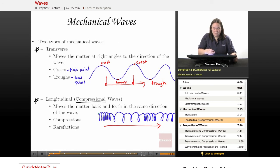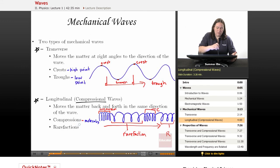This is where it compresses - this is a compression. And where it's spread out is your rarefaction. Where it's compressed is your compression, and where it spreads out is your rarefaction. The compression is the part of the wave where the molecules are squished together or compressed, and the rarefactions are where the molecules spread apart.